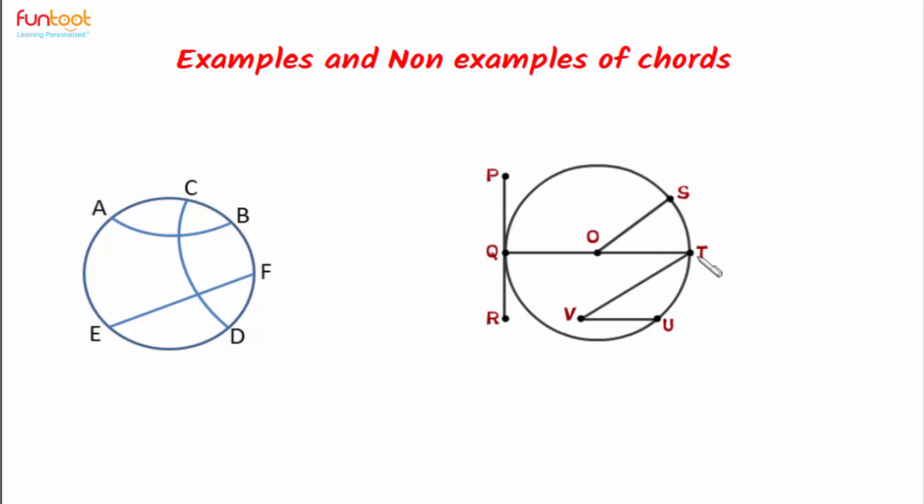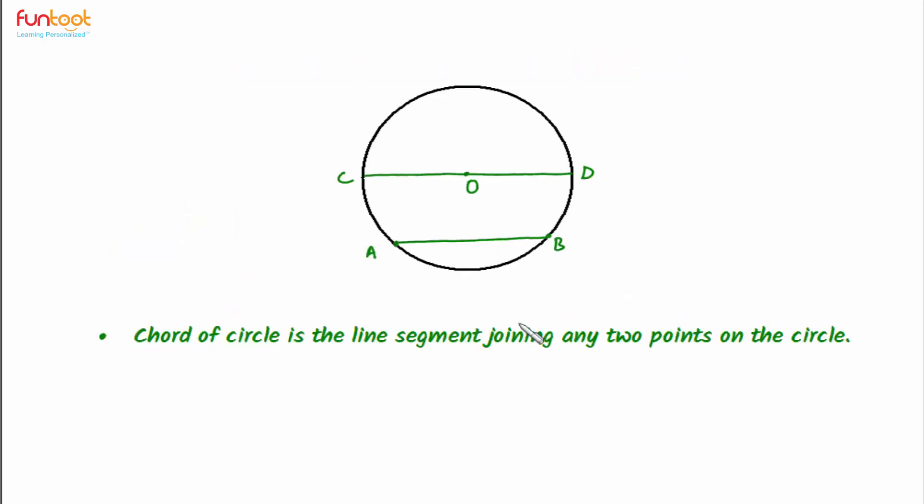Further, let's take some more examples. QT is the chord and VT is not a chord as it has only one point on the circle. Similarly VU, OS are also not chords, and PR is also not a chord because it does not join two points on the circle.